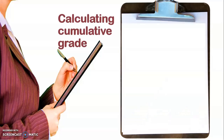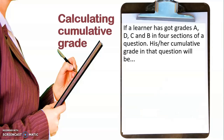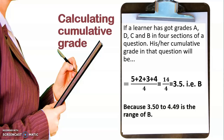Let me show you one more example. If a learner has got grades A, D, C, and B in four sections of one assignment, then the cumulative grade is calculated as 5 plus 2 plus 3 plus 4 — that is, 5 for A, 2 for D, 3 for C, and 4 for B — divided by 4. So 14 divided by 4 is 3.5, which is a B grade, because the range for B is 3.50 to 4.49. This is the formula through which we calculate our grades.